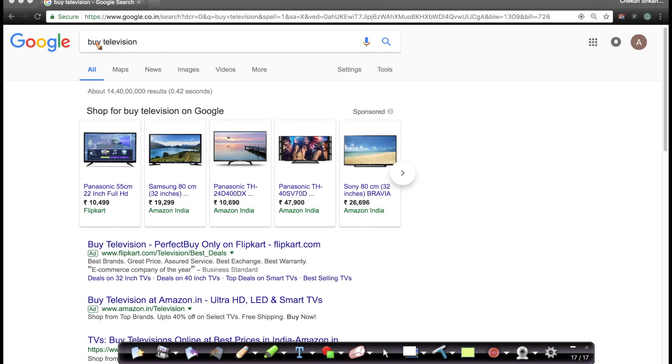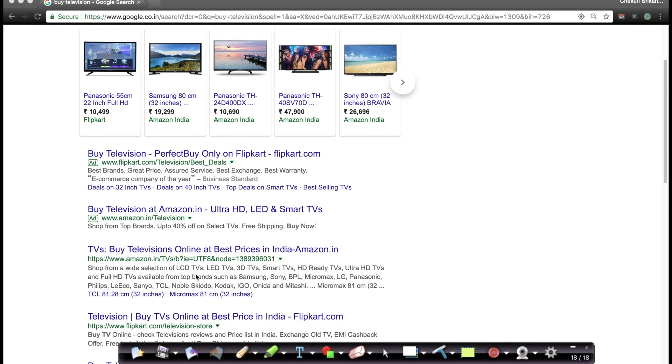Let's assume I go to Google and type buy television. Of course there are a bunch of videos and images here, but if you notice, there are these two pages where it says ad. So these ads are above the organic search results.